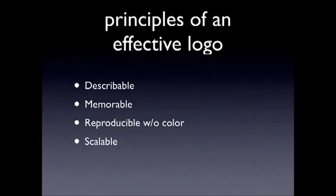Here are the things you need when evaluating an effective logo or identity. One: it needs to be describable — if you were telling a friend, you need to be able to say what it is. McDonald's golden arches: it's almost their tagline and their logo. Two: it needs to be memorable. Three: reproducible without color. And four: it has to be scalable — it needs to look awesome on a billboard and as a tiny bug in the corner of your show.